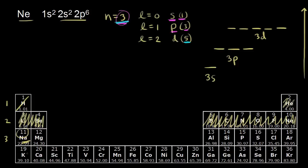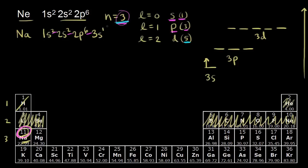Let's go back to sodium. Sodium has eleven electrons. The first ten we put in just like neon: 1s2, 2s2, 2p6. Your superscripts tell you the total number of electrons — that's two, four, and ten. So that takes care of ten electrons, and we have one more to account for. The eleventh electron for sodium is going to go into the third shell, and the lowest energy here would be the 3s orbital. So we put the eleventh electron for sodium into the 3s orbital.